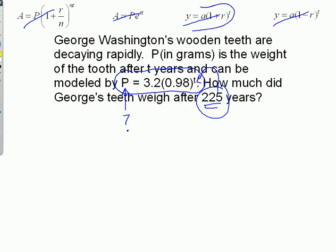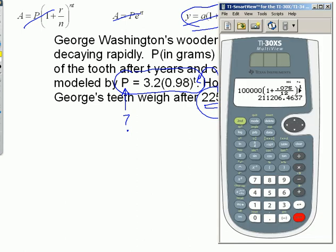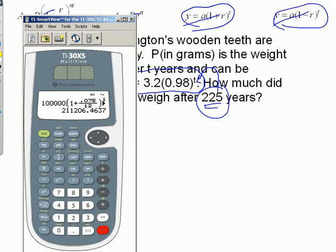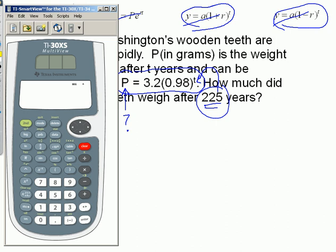This is probably just a variation of this one. Whoops, no it's not; it's this one. It's a decay, so it's one minus something, so it's decreasing at a rate of 0.02 or 2 percent. Let's go straight to the calculator. My point in showing this one is just that they give you a formula; you're just trying to figure out what you need to plug in. So 3.2, parenthesis, 0.98, close it, raise it to 225 power. 225 years later, it's 0.0339, and I'll go with 0.03 grams. Basically, there's hardly any noticeable trace of his teeth at this point.